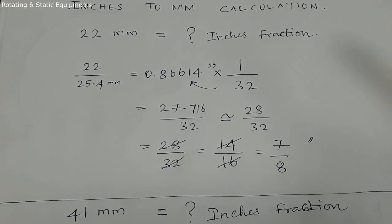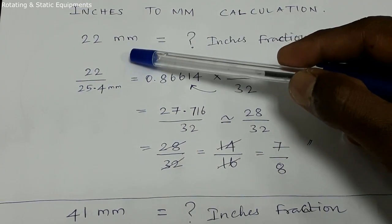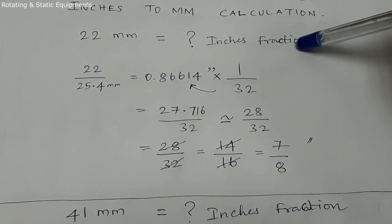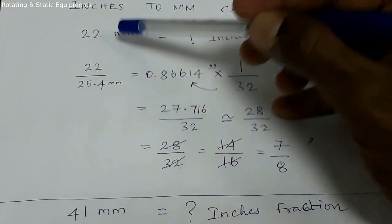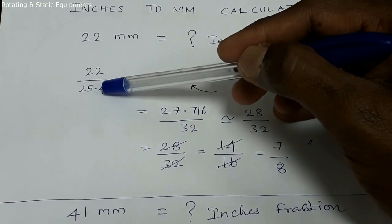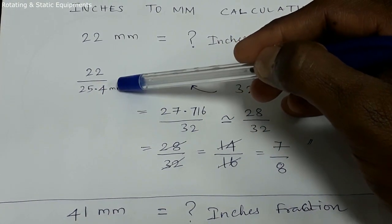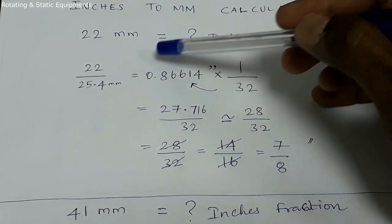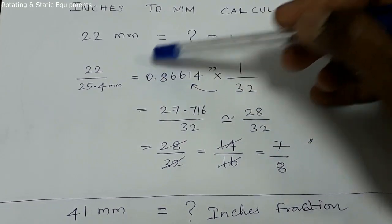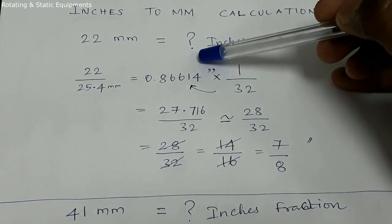For example, 22mm converted to inches fraction. 22mm divided by 25.4mm gives the inches decimal value — that is 0.86614 inches.